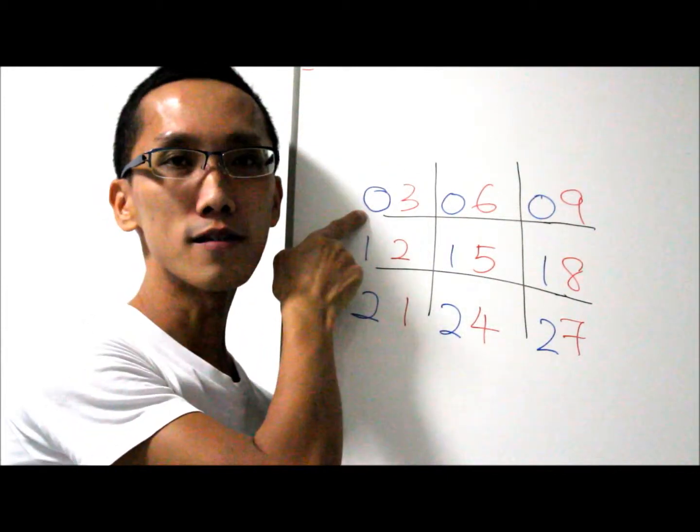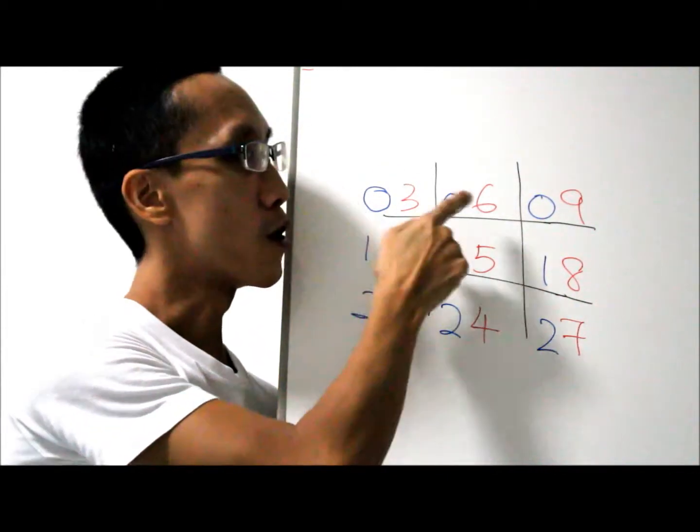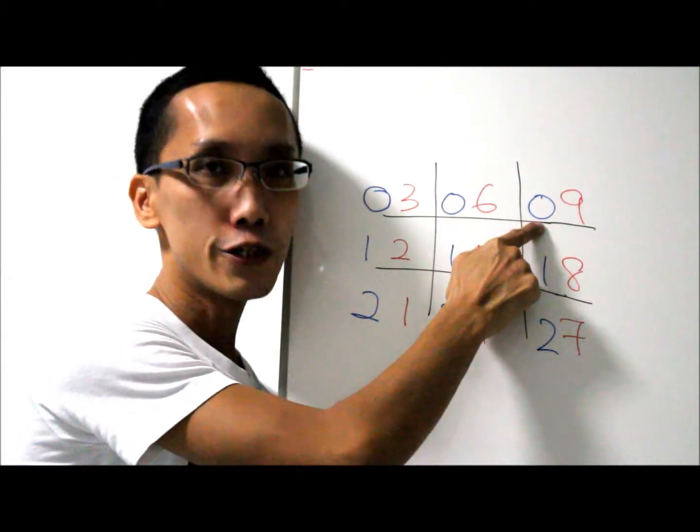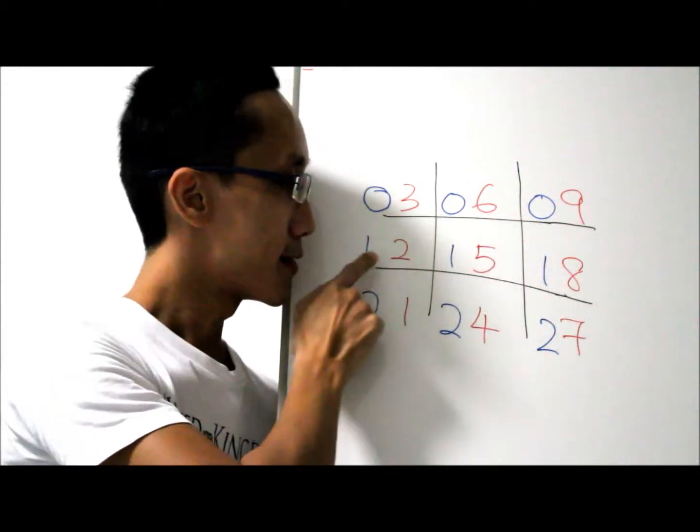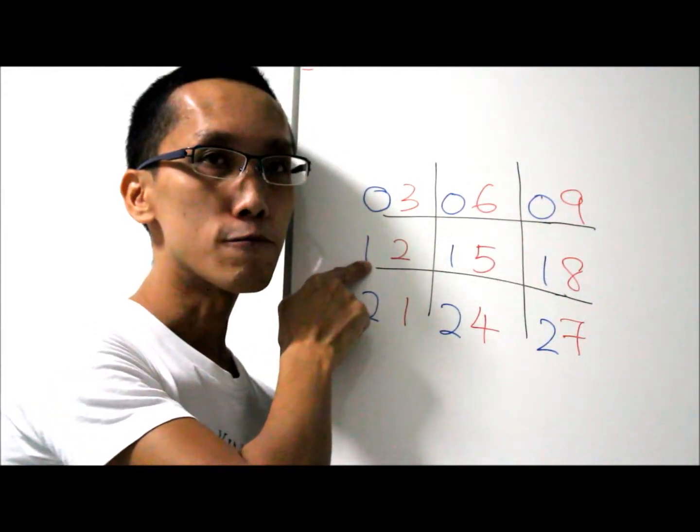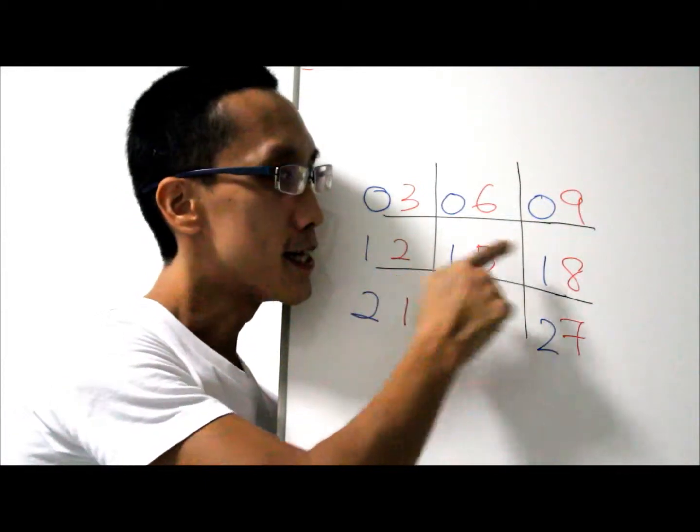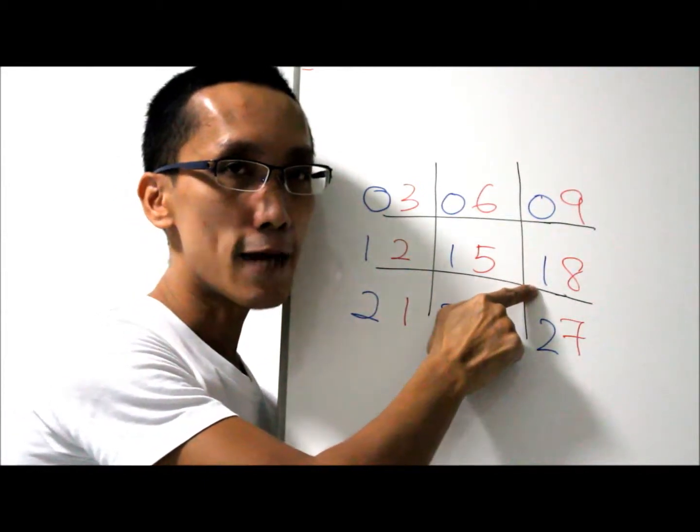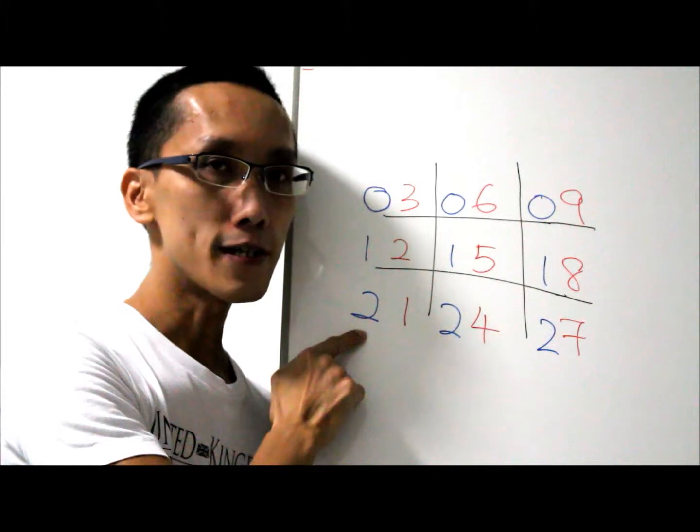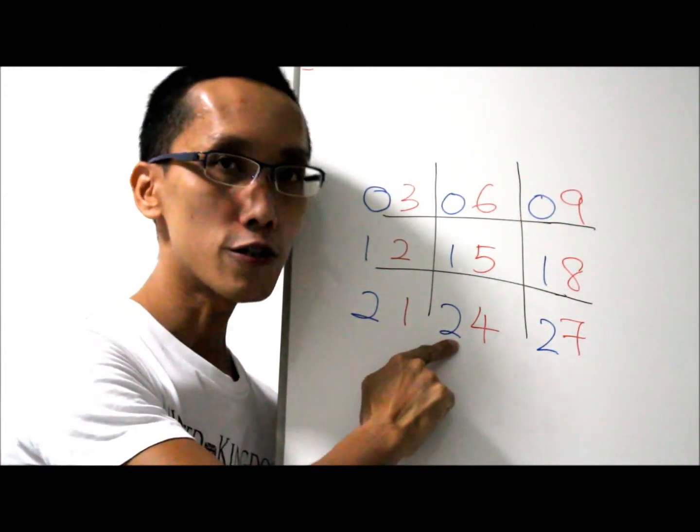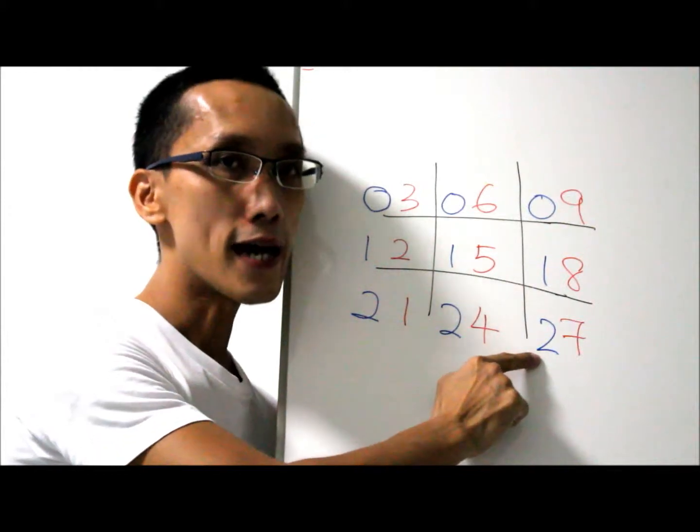This will be 1×3. This will be 2×3. This will be 3×3. This will be 4×3. This will be 5×3. This will be 6×3. This will be 7×3. This will be 8×3. This will be 9×3.